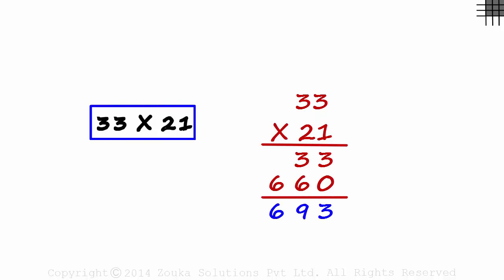The traditional way is to write 21 under 33. Then 3 times 1 is 3, 3 times 1 is 3 again. Write a zero here. 3 times 2 is 6 and 3 times 2 is 6. 3, 9, 6. 33 times 21 is 693.